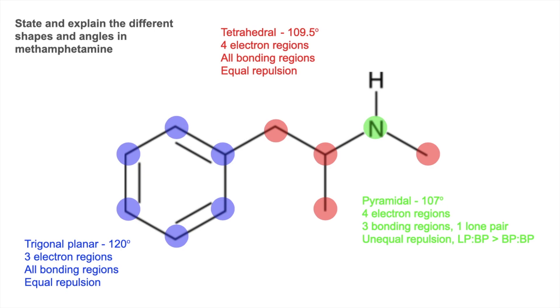So the lone pair to bonding pair repulsion, I've abbreviated it like that, is greater than bonding pair to bonding pair. And that shrinks the angle from 109.5, which you get with four bonding regions. It takes two and a half degrees off and takes it down to 107.